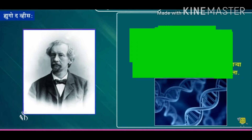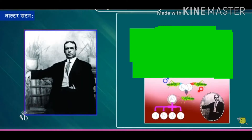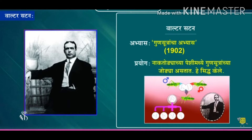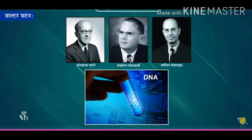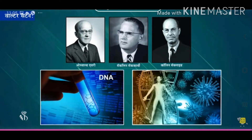In 1901, the reasons behind sudden changes were understood by the theory of mutations. Walter and Sutton observed the paired chromosomes in the cells of a grasshopper.